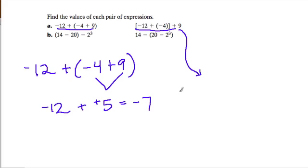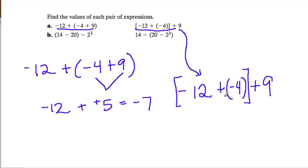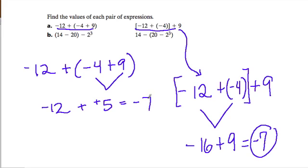Here, let's see if we also get negative 7. This time we have negative 12 plus negative 4 plus 9. Notice that we've moved the parentheses. Instead of having the parentheses around negative 4 and 9, it's now around negative 12 and negative 4. So this is now going to take priority. And this time we get negative 16 plus 9. If I add 9 to negative 16, what do I get? I also get negative 7. And this is the same thing.